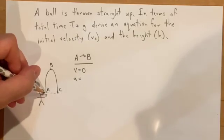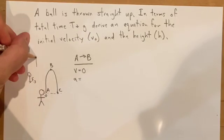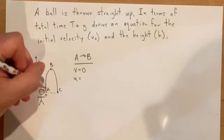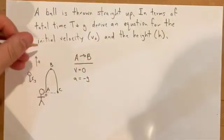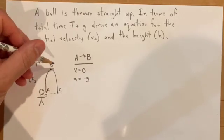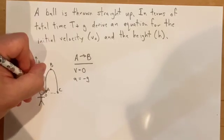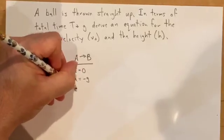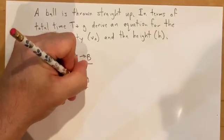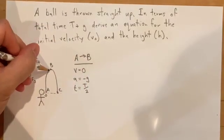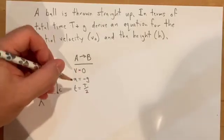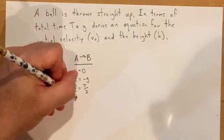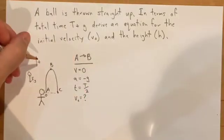I know the only force acting is gravity, so my acceleration is negative g because it's accelerating down if I call this way positive. I know the time from A to B is equal to T divided by 2, because the time from A to C was capital T. And then I am looking for v₀.